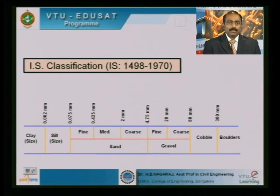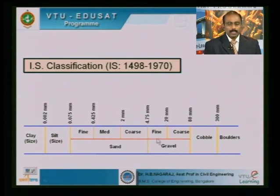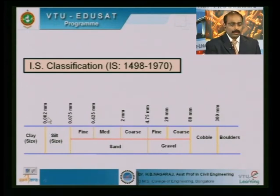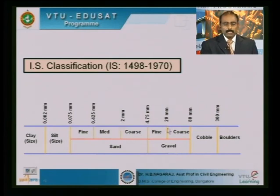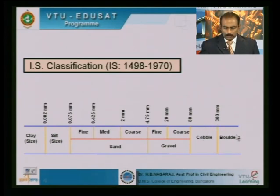The IS classification system combines grain size and plasticity index, similar to the unified soil classification. Clay size is less than 2 microns (0.002 mm), silt size from 2 to 75 microns, and sand from 75 microns to 4.75 mm — subdivided into fine sand (75–425 microns), medium sand (425 microns–2 mm), and coarse sand (2–4.75 mm). Gravel is divided into fine gravel (4.75–20 mm) and coarse gravel (20–80 mm), with cobbles from 80–300 mm and boulders greater than 300 mm.